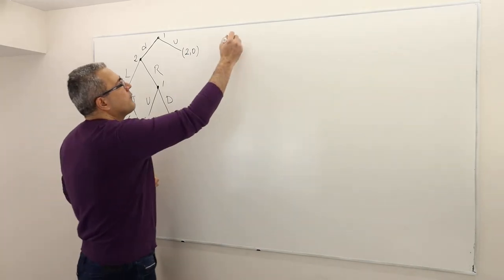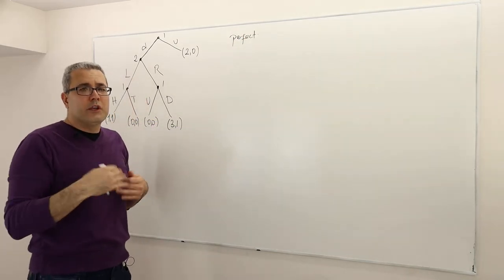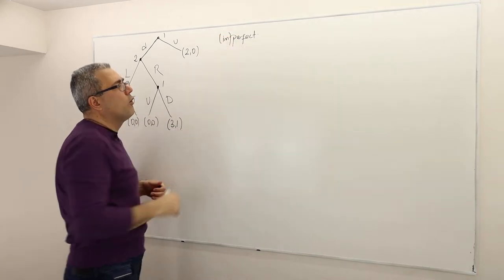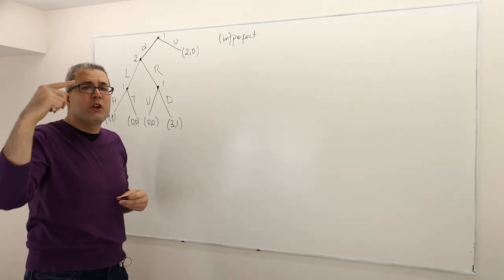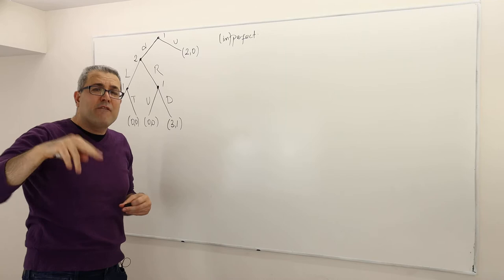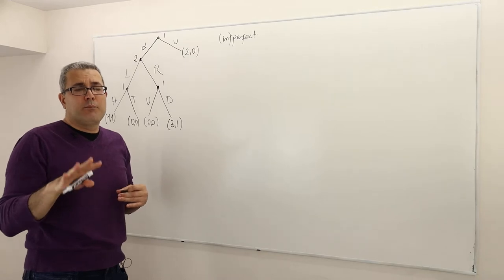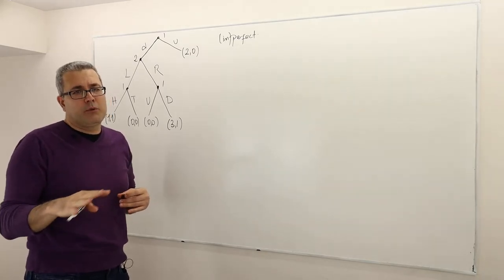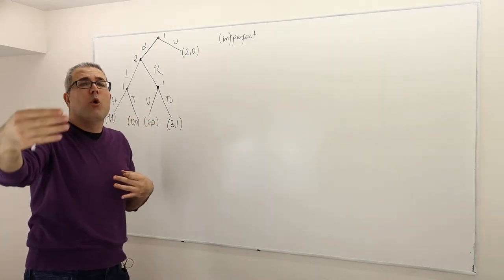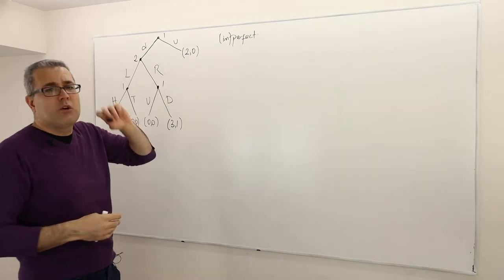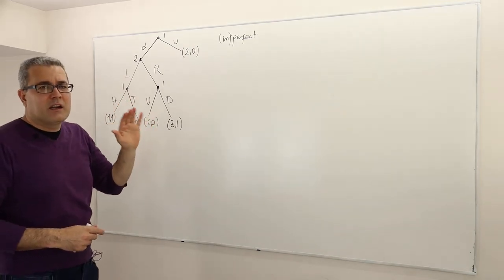This is a game with perfect information — perfect in the sense that everybody can observe all the previous moves. There are also what we call imperfect information games, where sometimes some players cannot fully observe all the previous actions. Everybody can remember and observe their own action — these are perfect recall games. But if a player cannot observe their opponent's previous actions, we call those imperfect information games. This game is a perfect information game, and they are the easiest.